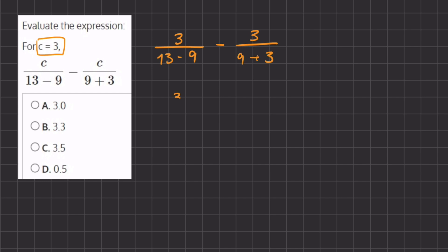So in our first fraction, we have 3 divided by 13 minus 9, which gives us 4, minus 3 divided by 9 plus 3, which gives us 12.